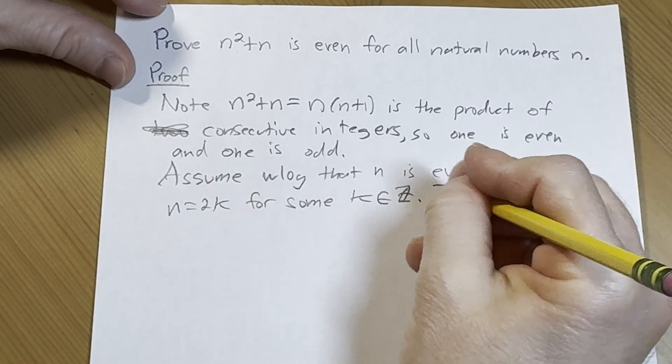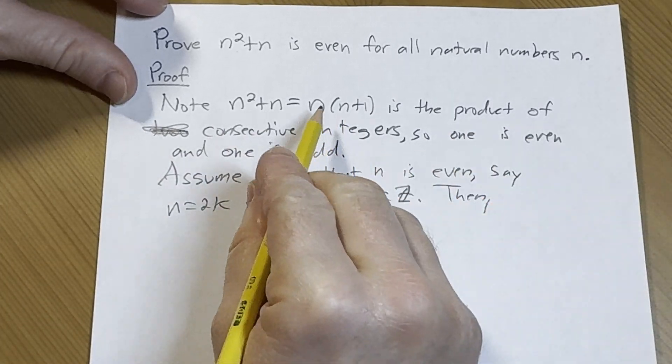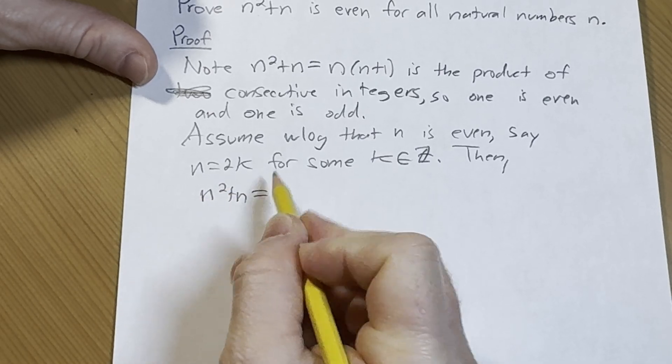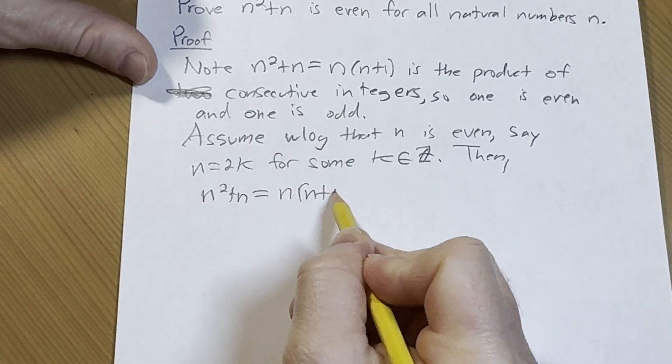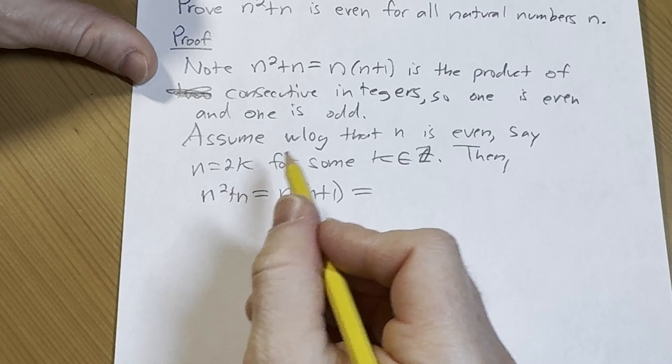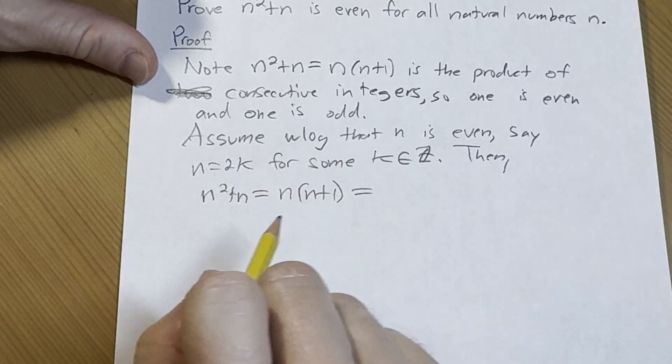Very nice. So then what do we have? We have n squared plus n. That's equal to n times n plus 1. But we know that n is equal to 2k.